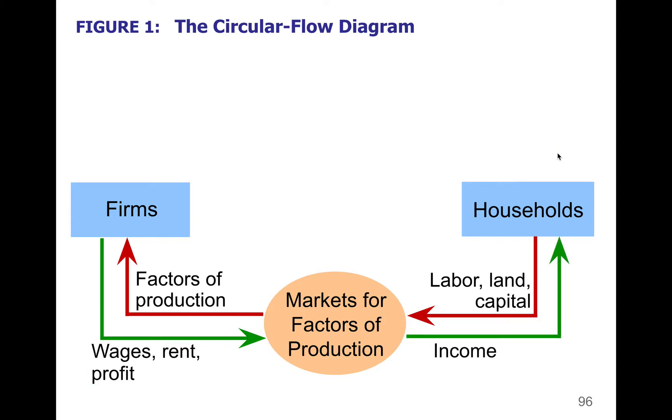In exchange for those factors of production, firms pay money — wages, rents, and profits — to households, and households use that as income.